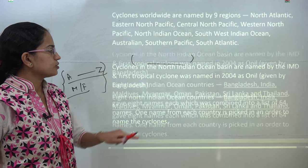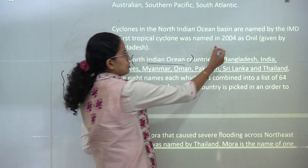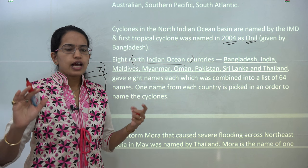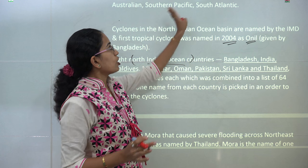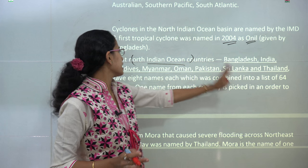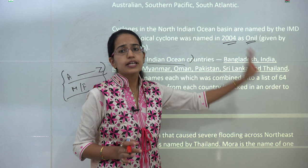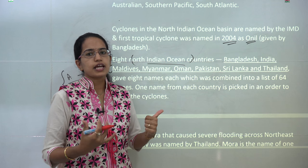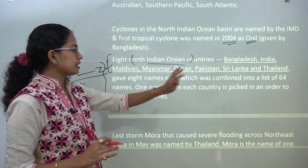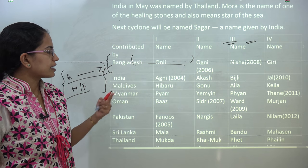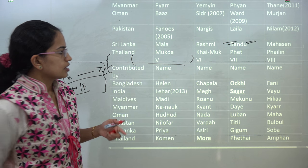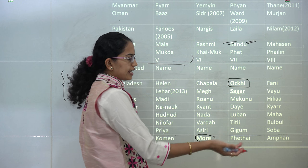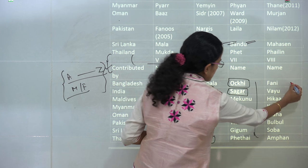For the North Indian Ocean, names first started in 2004 and the first cyclone was named Onil, given by Bangladesh. There are 8 countries that provide names: Bangladesh, India, Maldives, Myanmar, Oman, Pakistan, Sri Lanka, and Thailand. This is important for MCQs. Names are picked one by one in sequence — before Okhi was Thailand's name Mora, and the next cyclone will be named Sagar.